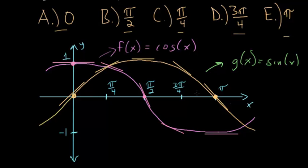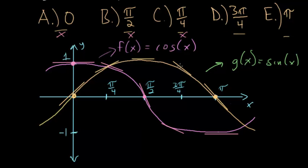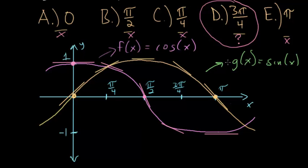Since this is a rough sketch, we can get a general idea of where the slopes are equal. At x equals 0, the cosine slope is positive and the sine slope is 0, so that's probably not correct. At pi over 4, they appear to be opposite slopes. At pi over 2, the sine derivative is 0 but not the cosine. At 3 pi over 4, they look pretty close — that might be the right answer. At pi, the cosine has slope 0 and the sine doesn't. So our best guess is that 3 pi over 4 is the right answer.